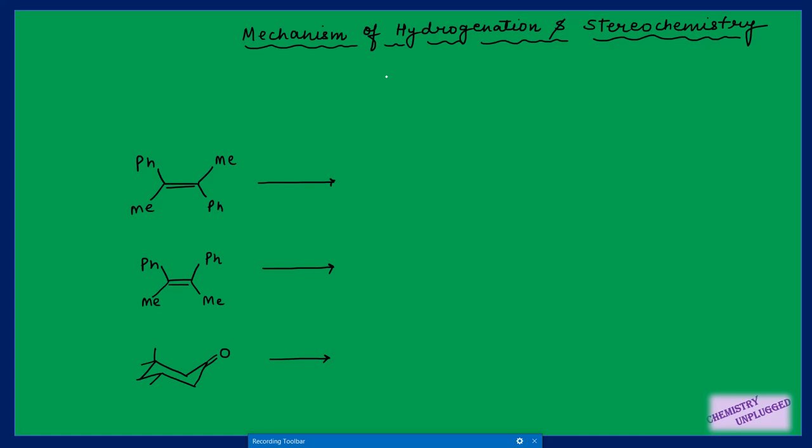The first and very important thing is that heterogeneous hydrogenation is most of the time cis type. Cis type means both hydrogen atoms will be added on the same side of the double bond — cis addition — and it is from the less hindered side. This is the most important point.